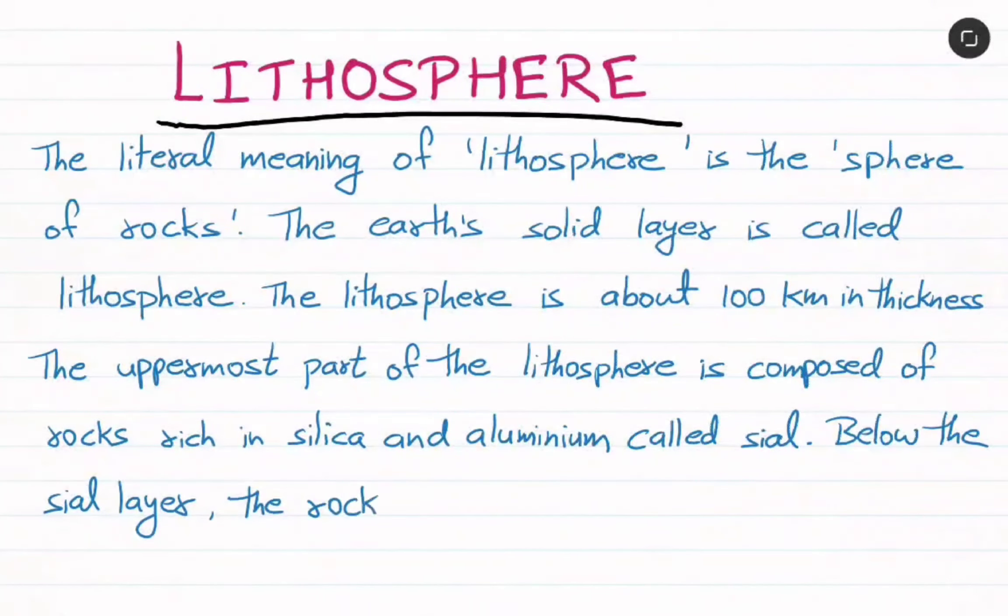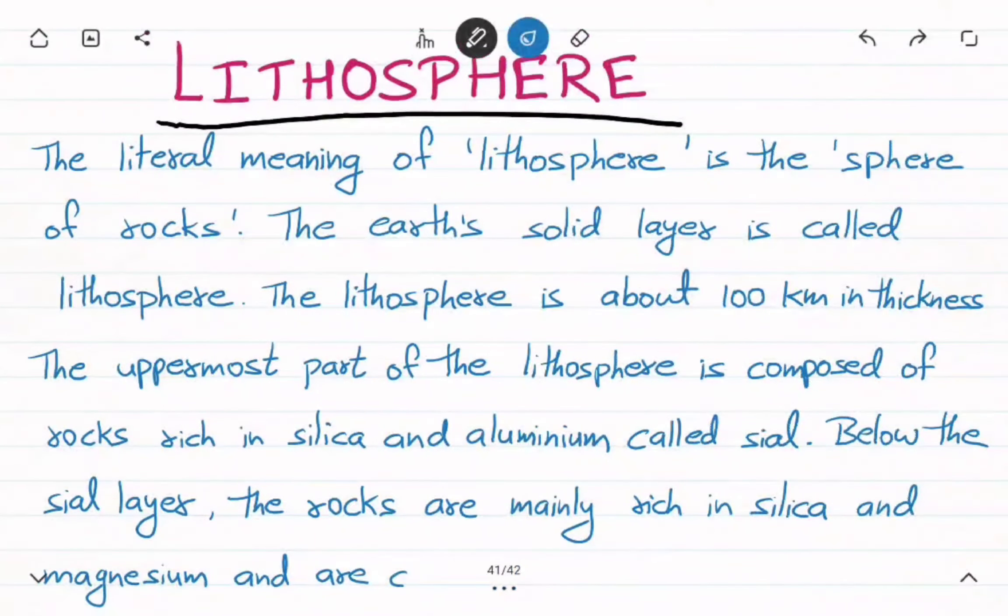Below the sial layer, the rocks are mainly rich in silica and magnesium and are called sima. Sial is the upper part and sima is the lower part of lithosphere.